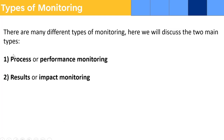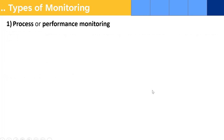There are different types of monitoring, but in this first session we will discuss two types: process or performance monitoring, and results or impact monitoring. We will go in detail with process or performance monitoring in session one, and then in session two onwards we will go with the other types and evaluation.